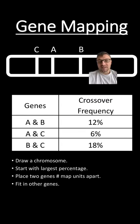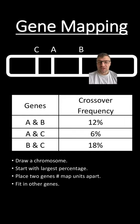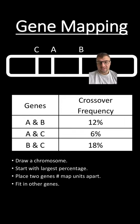Now it's important to remember that this arrangement is also possible: CAB. This is just looking at the chromosome in a different order. You can go CAB or BAC.